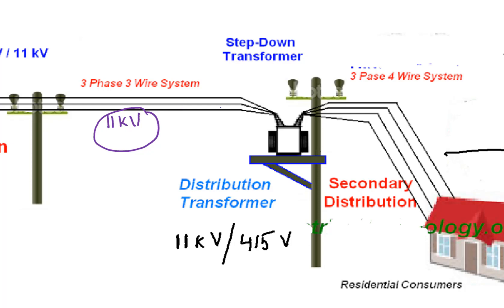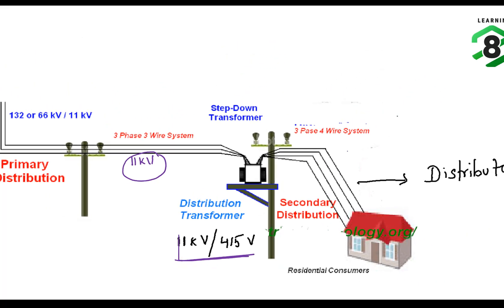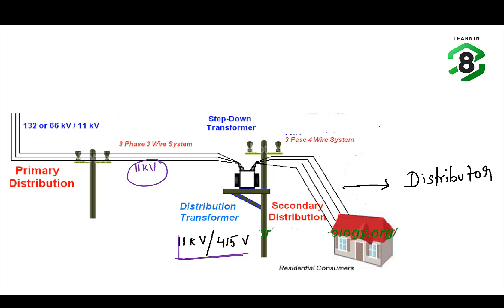There is then a step-down transformer that steps down the voltage from 11 kV to 415 volts. The nominal voltage of that three-phase, four-wire distributor is 415 volts. At every point in the network, there is a specific voltage which the system has to maintain — that voltage is called the nominal voltage. It is always expressed as a line-to-line RMS value, though the actual voltage may vary slightly from it.